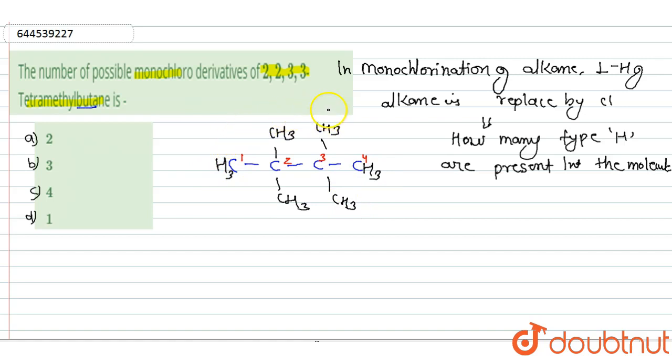So we have to check how many types of hydrogen present in this structure. So first we have to see that this is a symmetrical structure. This plane of symmetry is present in this molecule. So this hydrogen is attached to 3 degree, 4 degree carbon. This hydrogen also attached to 4 degree carbon and this hydrogen also attached to 4 degree carbon. Means they all hydrogen are equivalent.